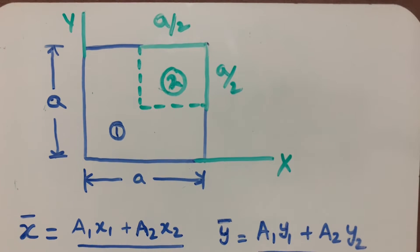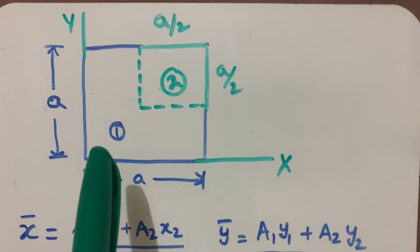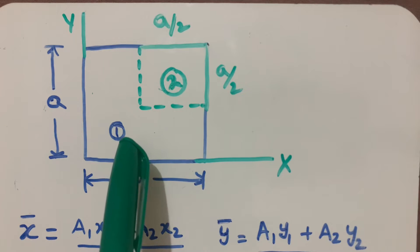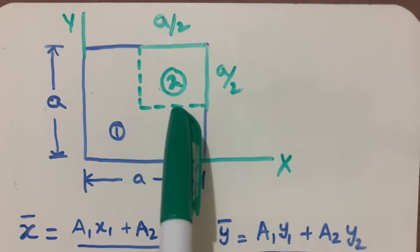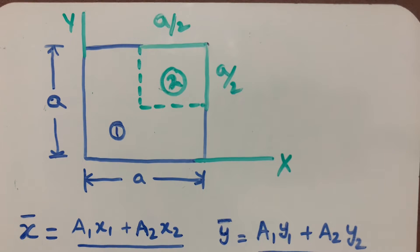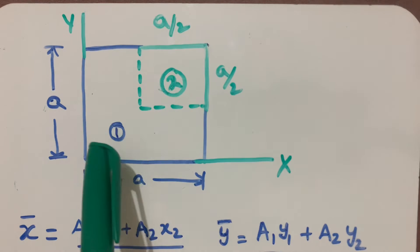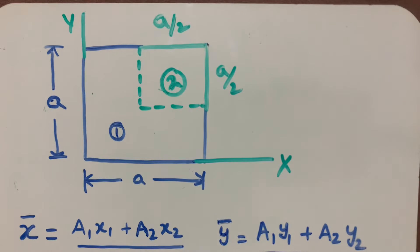Hello everyone. In this video I'm going to explain how to find the centroid for a given square plate. We have to find the centroid for this square plate after removing a small square plate from the big square. I'm considering the big square as 1 and the small square as 2.